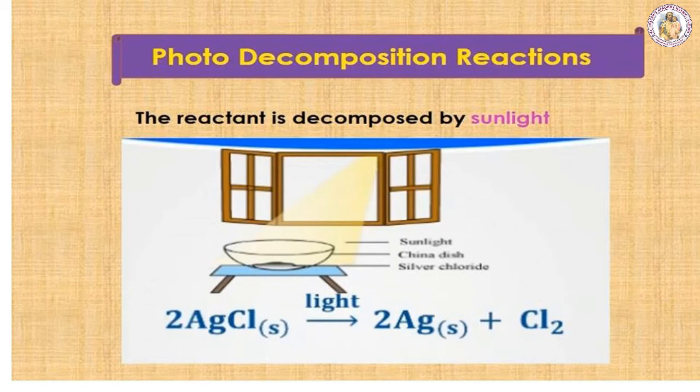The next type is photodecomposition reaction. Light is another form of energy. For example, silver bromide when exposed to light breaks into silver metal and bromine gas — the decomposition caused by light is called photolysis. AgCl on light → Ag + Cl2, and AgBr on light → Ag + Br2. The yellow-coloured silver bromide turns into grey-coloured silver metal. This is also a compound-to-element decomposition reaction.